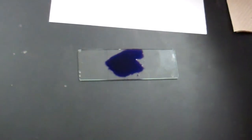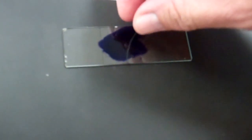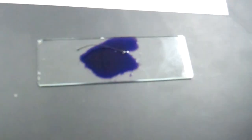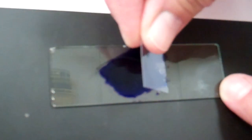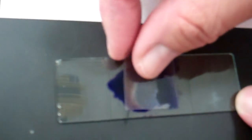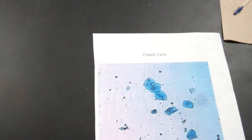Take your thread or your hair and lay it into your drop and then add your cover slip. Again, using the angle, slowly lower it down so you don't get too many air bubbles. And then you're going to look at it and draw your cheek cells on high power.